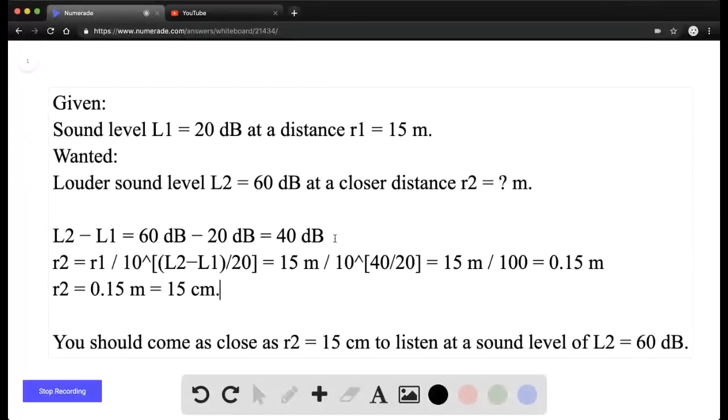Okay, so we want to know how close we have to get to hear the conversation at 60 decibels. The difference between the loudness of the two conversations is 60 minus 20, which is 40 decibels. Then using the formula, the second distance that we want equals the first distance over 10 to the difference between the two divided by the original loudness.